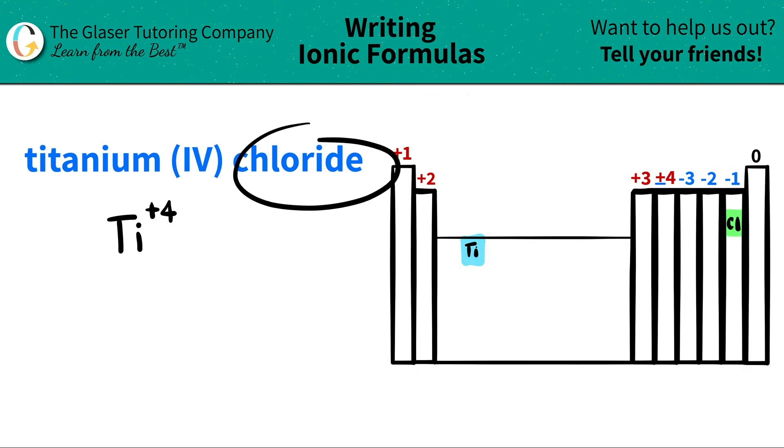Chlorine always turns to chloride when it's being named. And chlorine has an oxidation trend or a charge of being a negative one. So I'm going to write that I have Cl with a negative one.